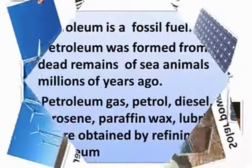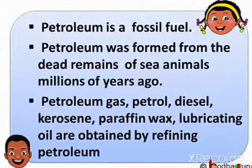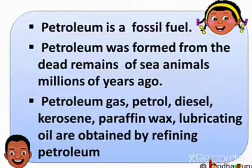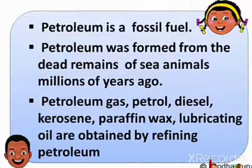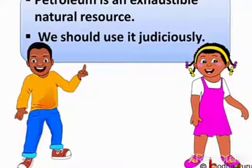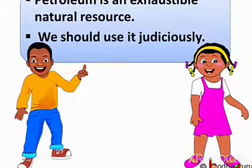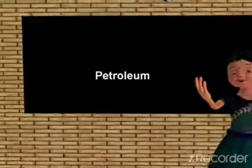In the not so distant future, solar energy would also be used to run cars. To sum up: petroleum is a fossil fuel. Petroleum was formed from the dead remains of sea animals millions of years ago. Petroleum gas, petrol, diesel, kerosene, paraffin wax, and lubricating oil are obtained by refining petroleum. Like coal, petroleum is an exhaustible natural resource, which means only a limited supply is available, hence we should use it judiciously.